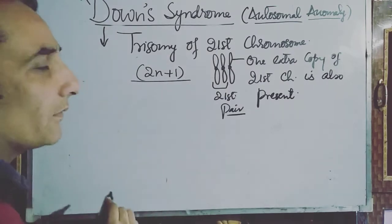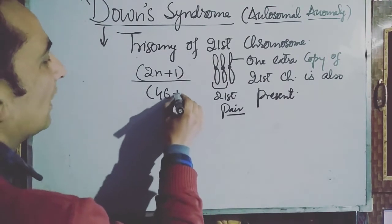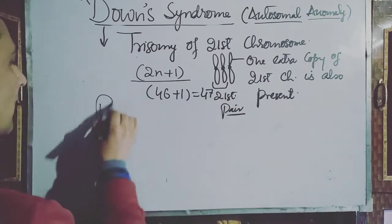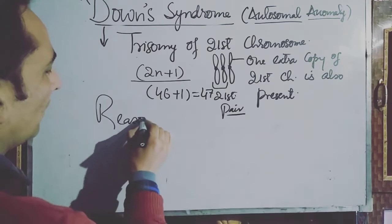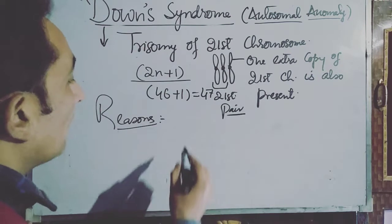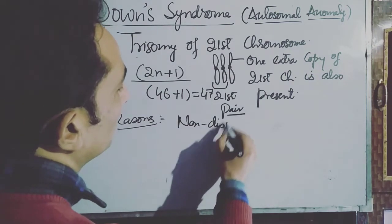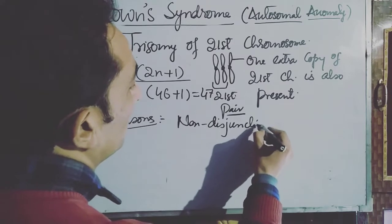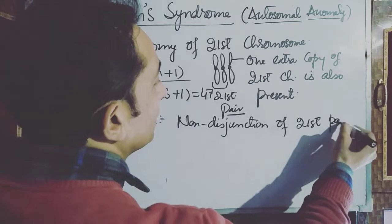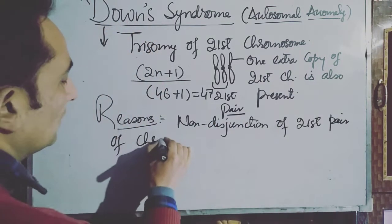As you know, trisomy is 2n plus 1. So the chromosome number in persons suffering from Down syndrome in humans would be 46 plus 1, equal to 47. The reason why a person suffers from Down syndrome is because of non-disjunction — non-disjunction of the 21st pair of chromosomes.